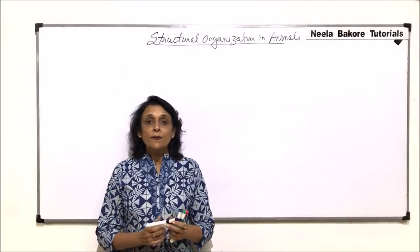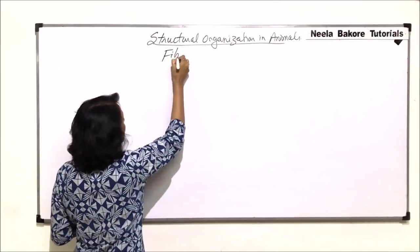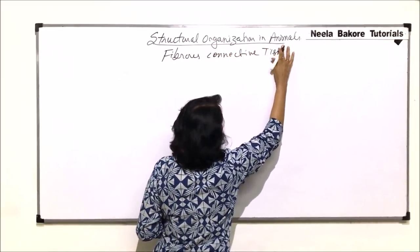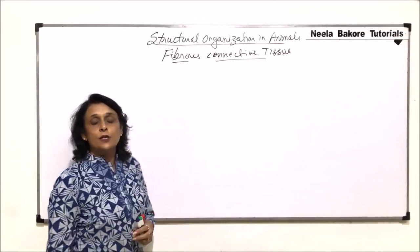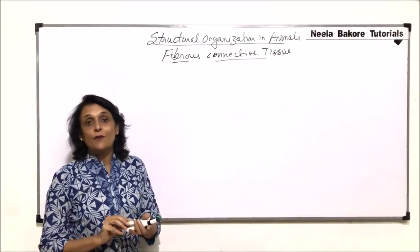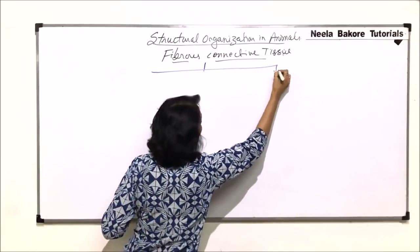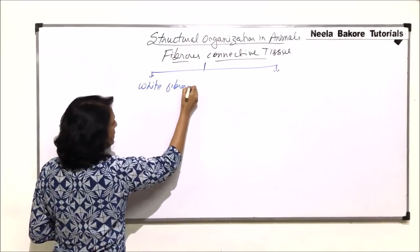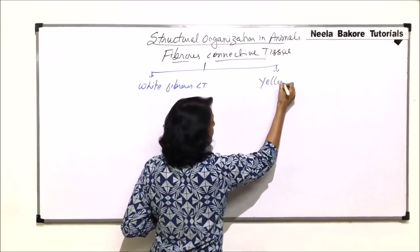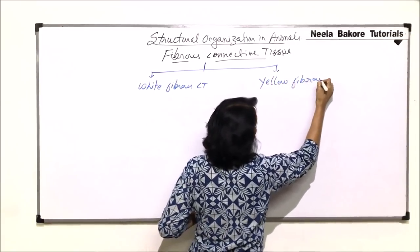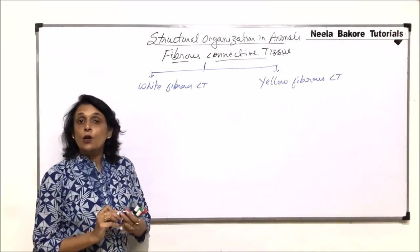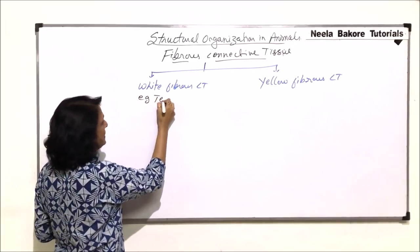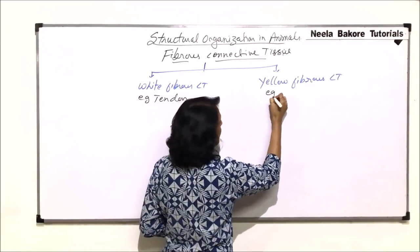In this part we'll talk about fibrous connective tissue. As the name suggests, this connective tissue is rich in fibers. Depending upon which type of fiber it has, we classify it into two categories: white fibrous connective tissue and yellow fibrous connective tissue. White fiber is actually collagen and yellow fiber is elastic.